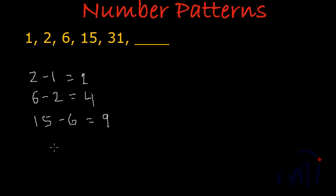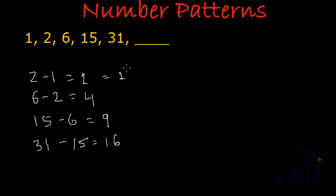Then the fifth term 31 minus the fourth term 15 gives a difference of 16. Now you have found the logic! This 1 is equal to 1 squared, this 4 is equal to 2 squared, then we have 9 which is 3 squared, and 16 which is 4 squared.